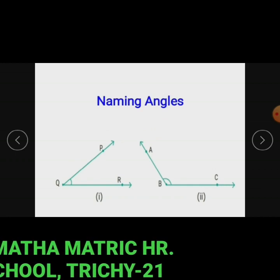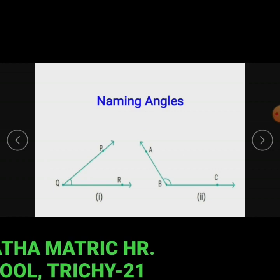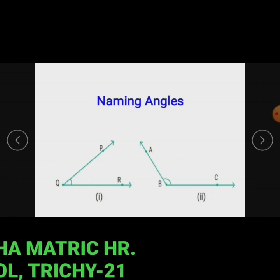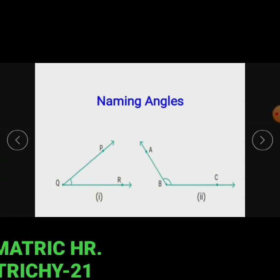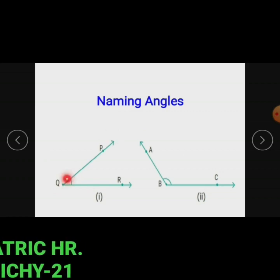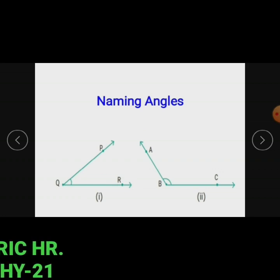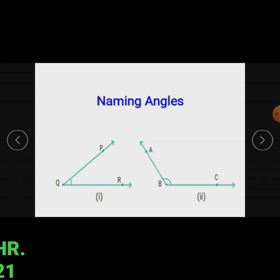Naming angles: we name the angle as shown in figures one and two. Figure one shows the angle PQR, where ray QP and QR are its sides — P is on QP and R is on QR. Figure two shows the angle ABC, where ray BA and BC are its sides — A is on ray BA and C is on ray BC.